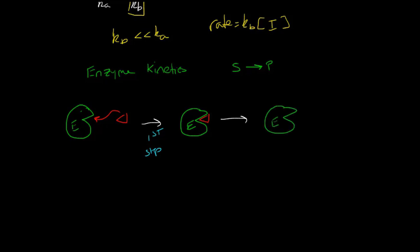Once the enzyme interacts with the substrate, it can then convert the substrate to a product, and when it does, it releases that product. We now have our enzyme free again, and we've converted the substrate — shown as the red wedge — to a different molecule, the product. So in the first step we have the physical interaction between enzyme and substrate, and in the second step the enzyme-substrate complex is converted to product. To get from substrate all the way to product, we go through these two steps.